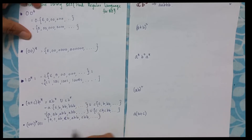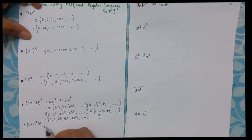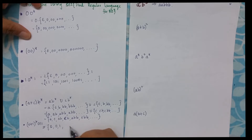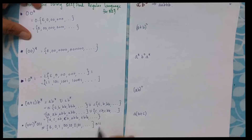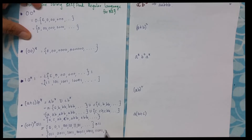Here I will have (0+1)*011. This indicates any occurrences of 0 or 1, so this can be written as epsilon, 0, 1, 00, 01, 10, 11, and so on, followed by 011. So I will get 011, 0011, 1011, 0101, and so on.